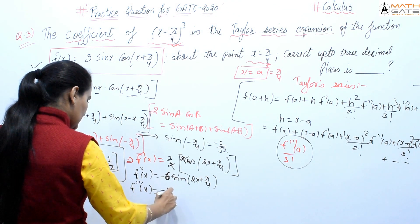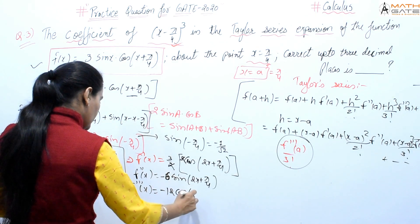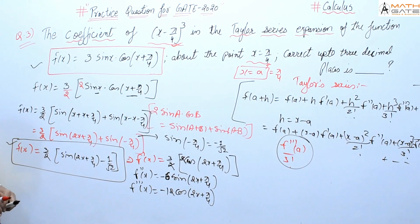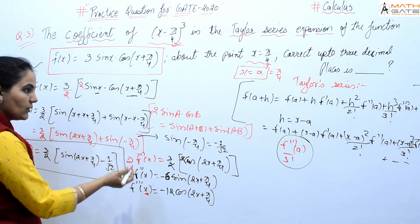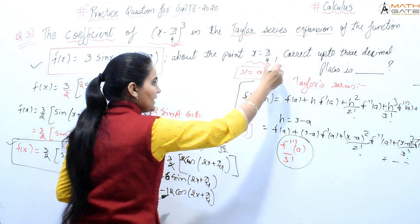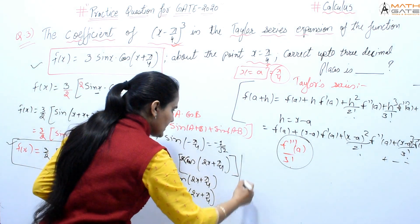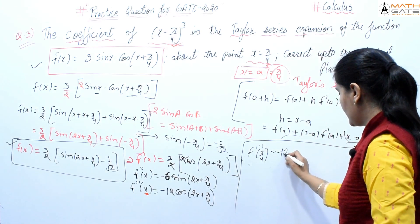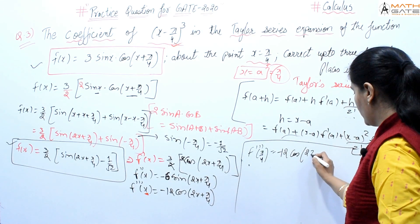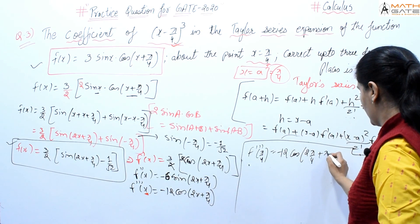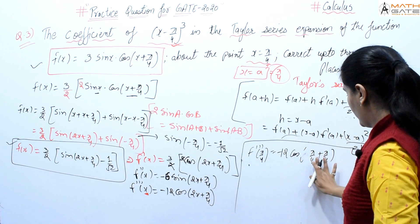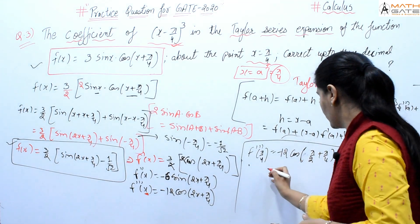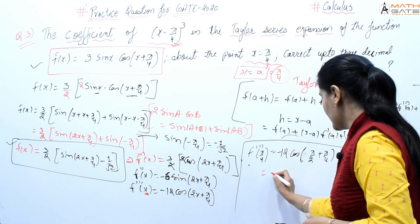Now we need to substitute x = π/4. f'''(π/4) = -12cos(2·π/4 + π/4) = -12cos(π/2 + π/4). Using cos(90° + θ) = -sin(θ), this becomes 12sin(π/4).